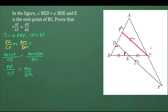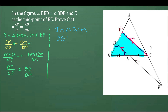Now we apply BPT in another triangle — this time triangle BCM. We know that DE is parallel to CM. So applying BPT in triangle BCM, we get BE over EC is equal to BD over DM.